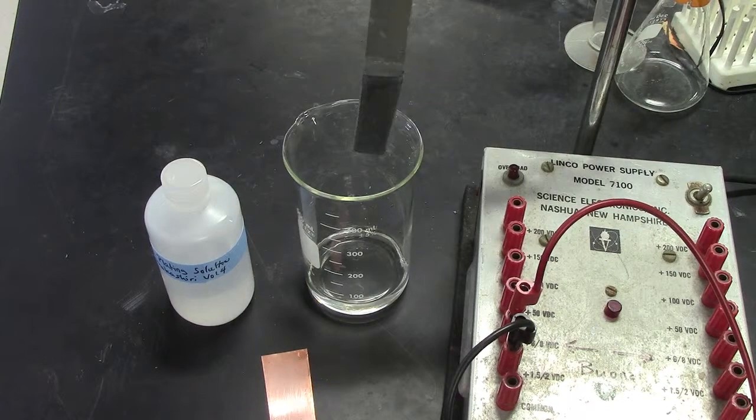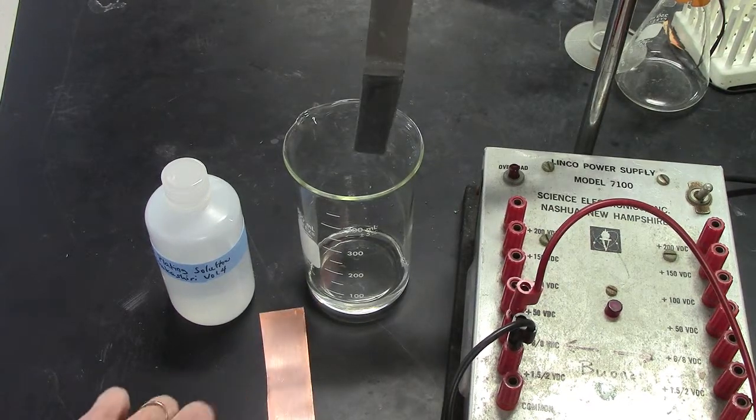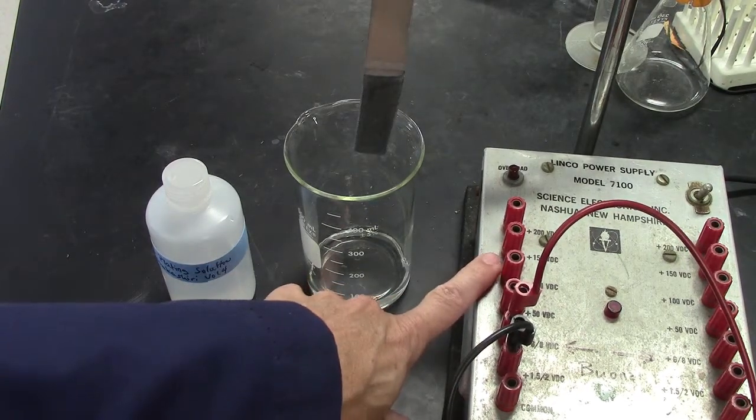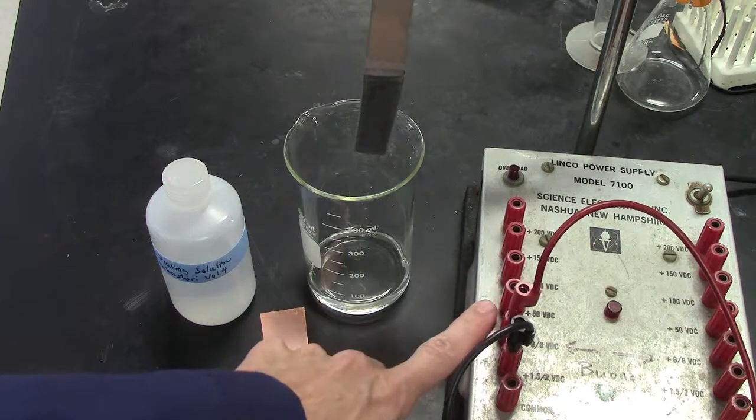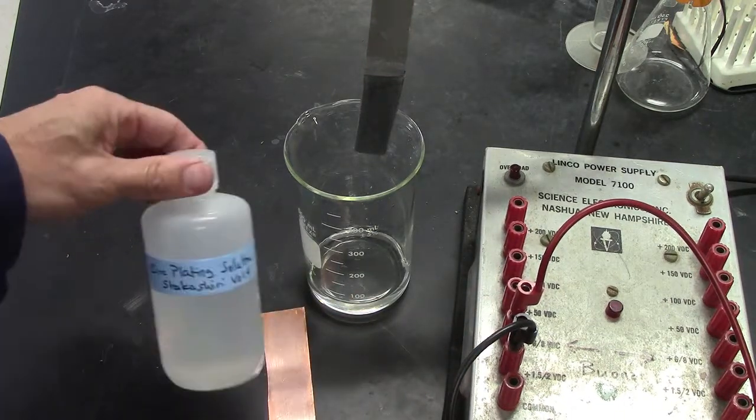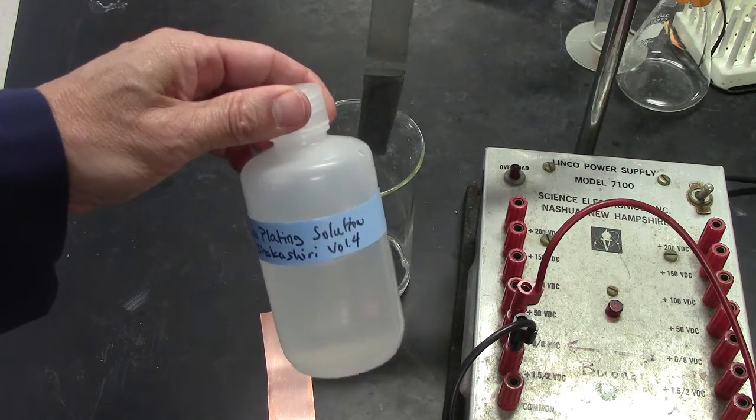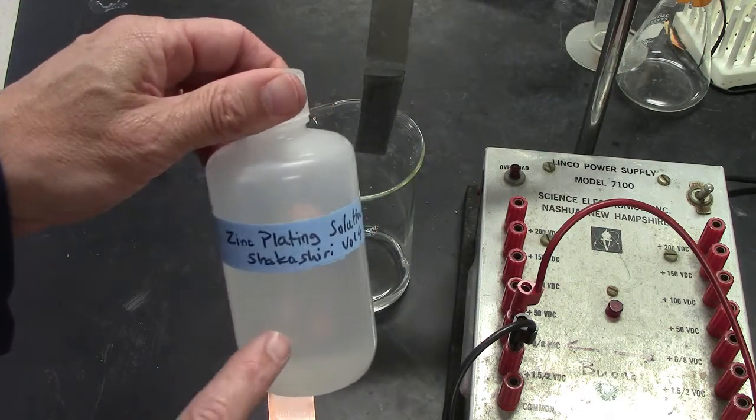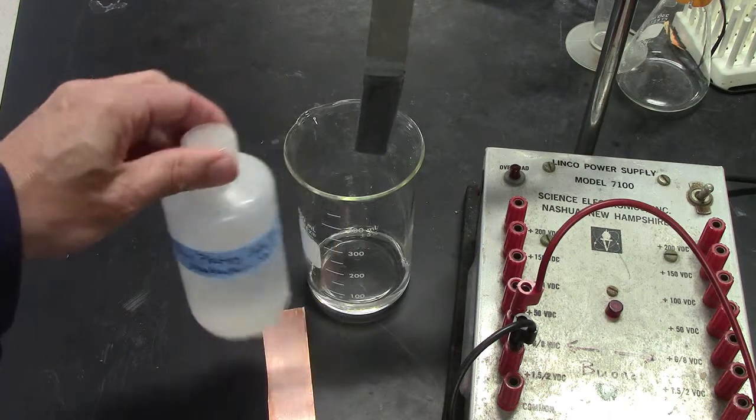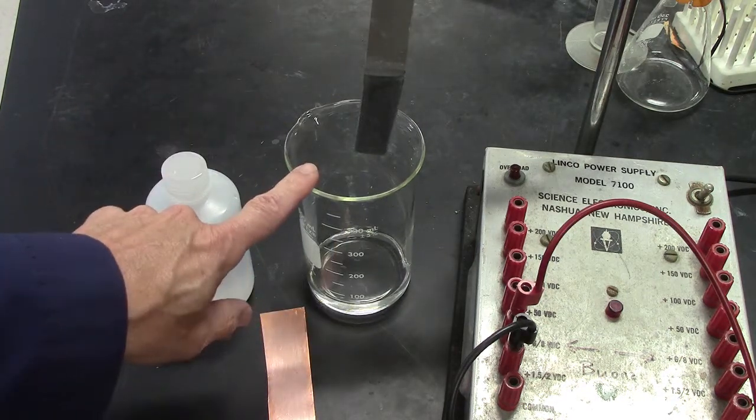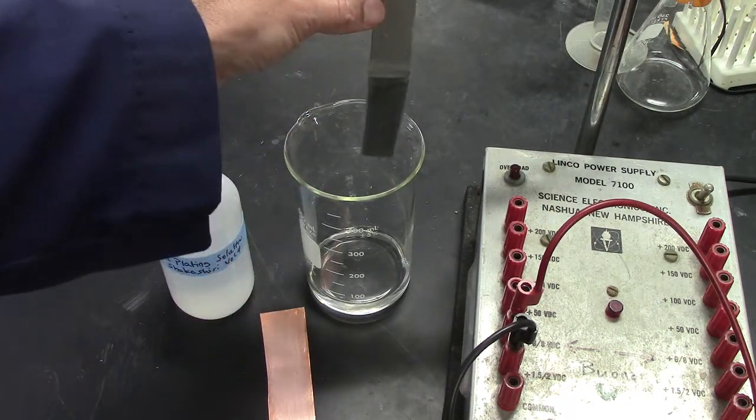Here are the basic components: a strip of copper metal. This is called a power supply. It provides electricity. I have a solution. It has within it zinc sulfate ions. Here's a beaker. Here's a bar of zinc.